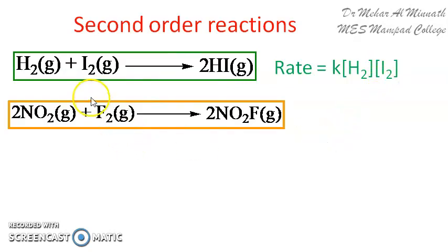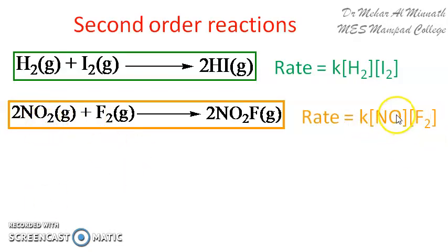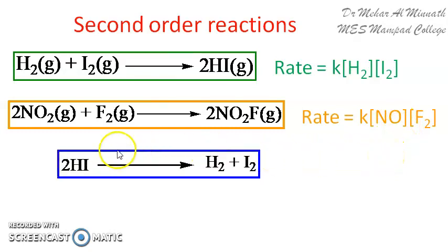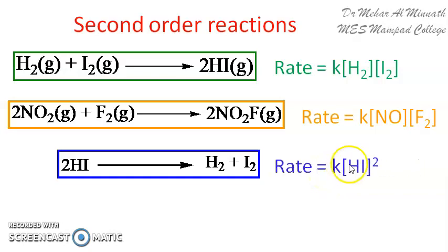Another example is the reaction between NO₂ and F₂. Even though the reaction equation shows 3 molecules involved, in the rate expression only one molecule of NO₂ and one molecule of F₂ is involved, making this a second order reaction. A third example is the decomposition of HI to H₂ and I₂, with rate given as K into [HI]², an example involving a single reactant molecule.